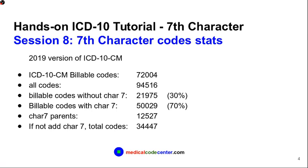Here are some code statistics about the 7th character, based on the 2019 version of ICD-10 CM. We have 72,004 billable codes — around 94,000 if you include non-billable codes. Of the 72,000 billable codes, around 22,000 do not have a 7th character, but 50,000 must have a 7th character. That's around 70% — 7 out of 10 ICD-10 CM codes need a 7th character.